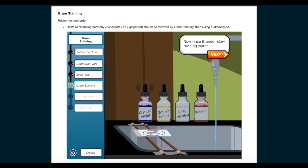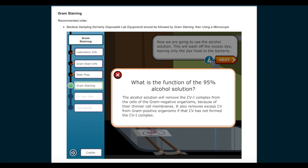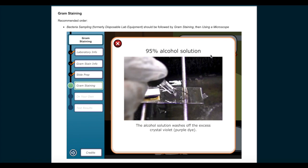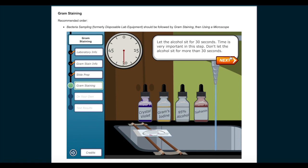Now we are going to use the alcohol solution. This will wash off the excess dye, leaving only the dye fixed to the bacteria. What is the function of the 95% alcohol solution? The alcohol solution will remove the CVI complex from the cells of the gram-negative organisms because of their thinner cell membranes. It also removes excess CV from gram-positive organisms if that CV has not formed the CVI complex. Use the alcohol dropper to cover the sample in alcohol. Let the alcohol sit for 30 seconds. Time is very important in this step. Don't let the alcohol sit for more than 30 seconds. Now rinse it off under slow running water.